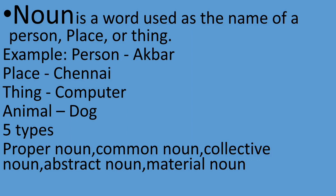Proper noun is the name of a particular person or place. Common noun is a name given in common to every person or thing of the same class or kind. Collective noun is the name of a number of persons or things taken together. Abstract noun is usually the name of a quality, action, or state.